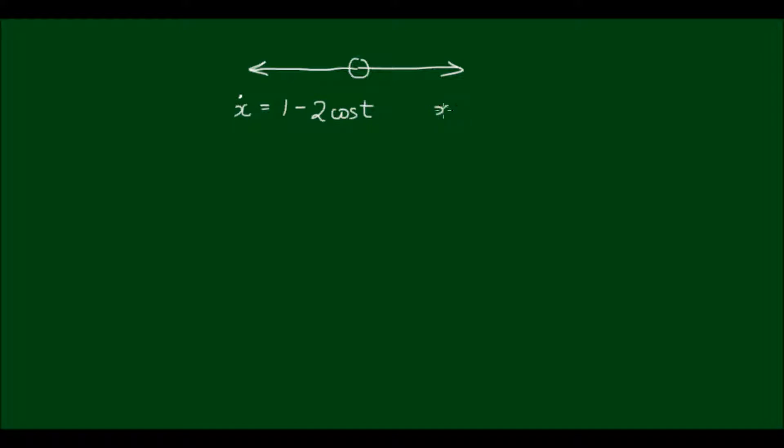We're also given that the initial displacement when t equals 0, x is equal to 3 meters to the right of the origin.